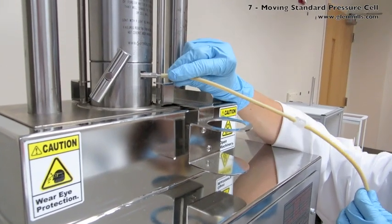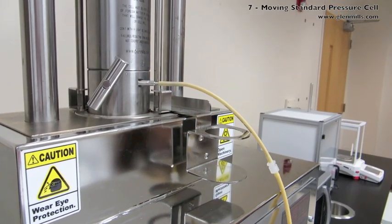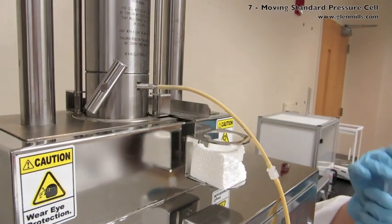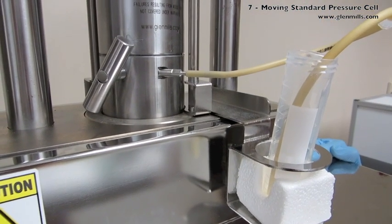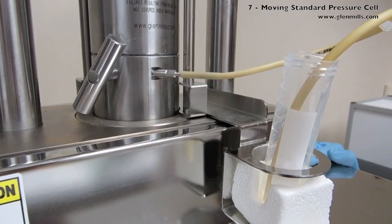Position the sample outlet tube and extension flexible tube to direct the output into the collection beaker that is sitting in the tray. As the lower platen moves, this tray will ride up to stay in position while collecting the sample.